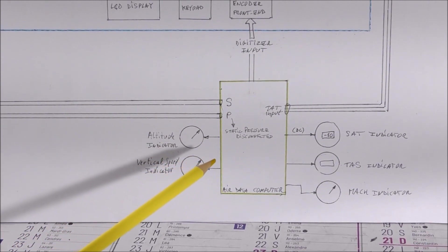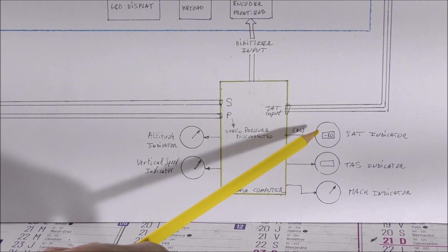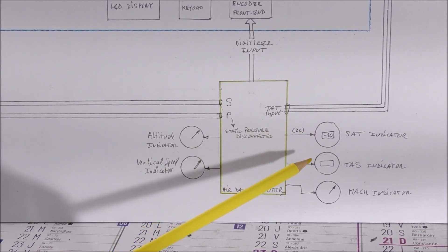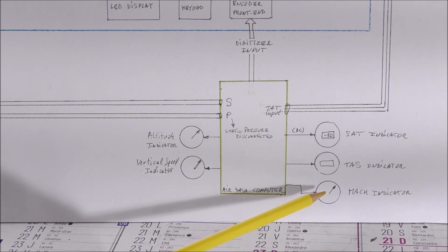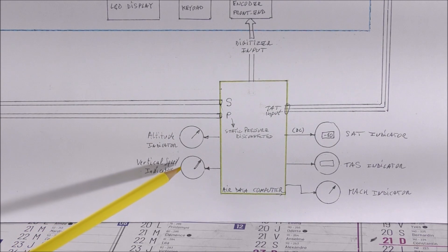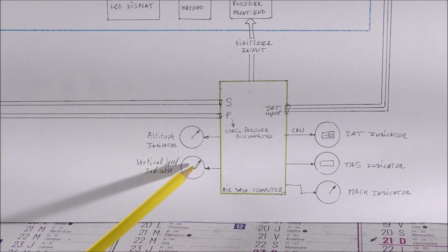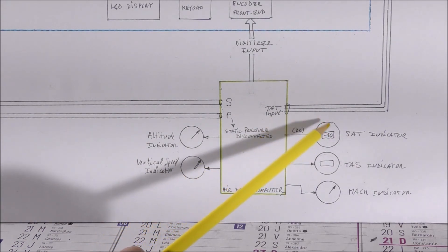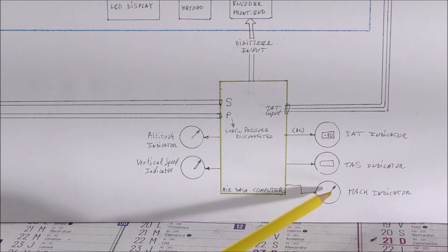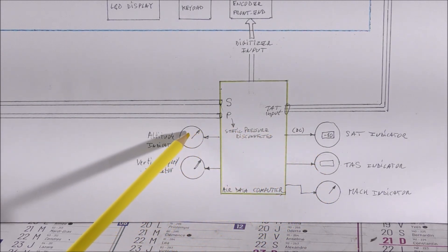The air data computer itself will be connected to several instruments: one is the static air temperature indicator, the second one is the true air speed indicator, there will be a Mach number indicator, an altitude indicator, and a vertical speed indicator. I have already some of these instruments — the vertical speed indicator, the static air temperature, and the Mach indicator. What is missing is a true air speed indicator and an altitude indicator.